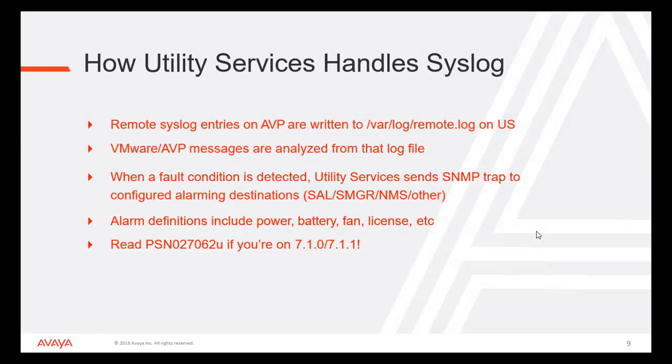How does Utility Services handle syslog? Remote syslog entries on AVP are written to /var/log/remote.log on the Utility Server. VMware and AVP messages are analyzed from that log file. When a fault condition is detected, Utility Services sends an SNMP trap to the configured alarming destinations such as SAL, System Manager, NMS, etc. Alarm definitions include Power, Battery, Fan, License, etc. Refer to PSN 27062U if you are on 7.1.0 or 7.1.1.